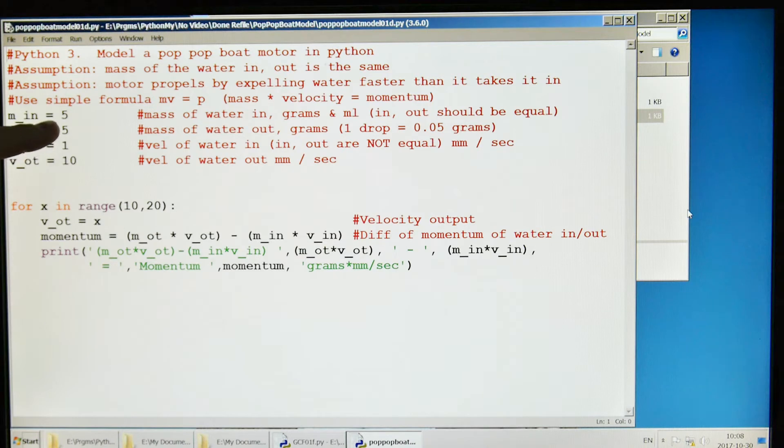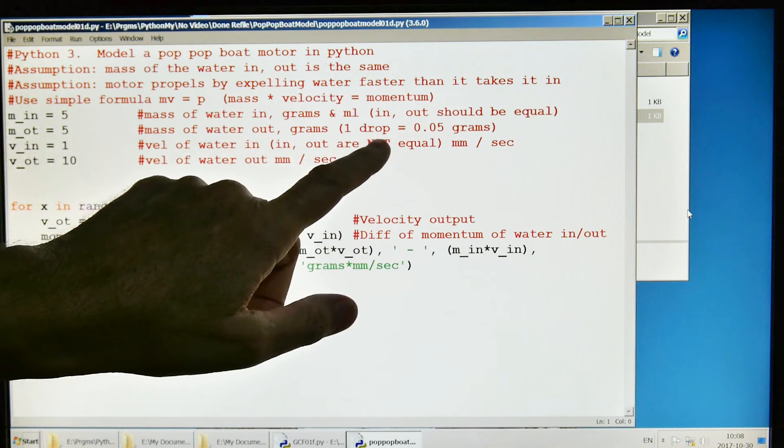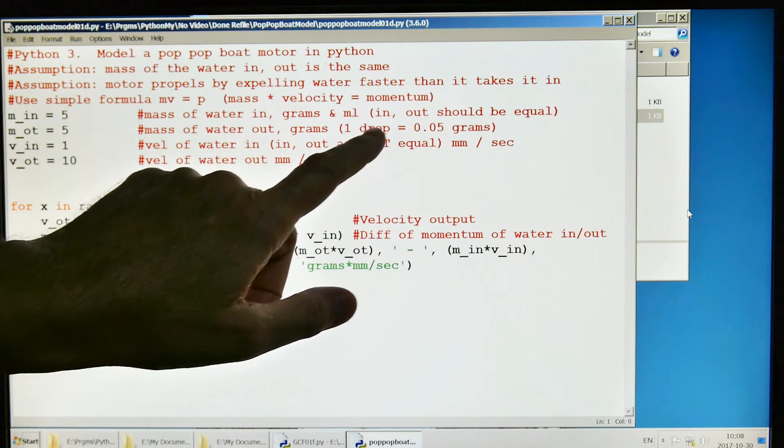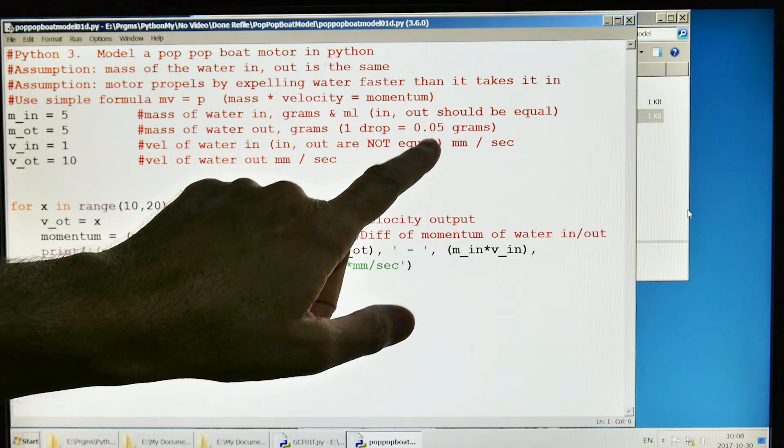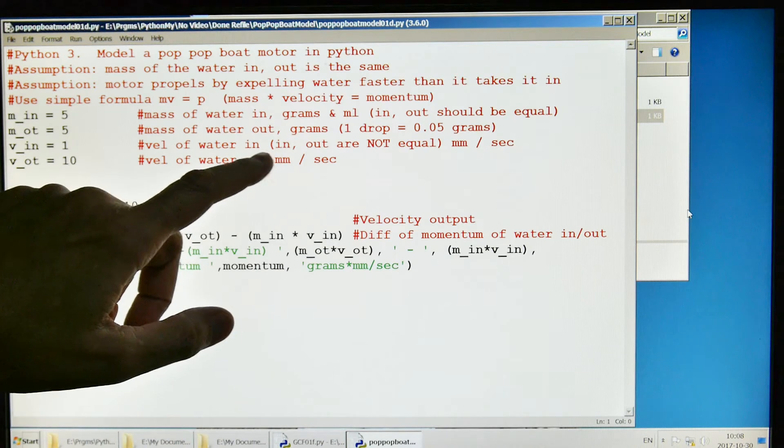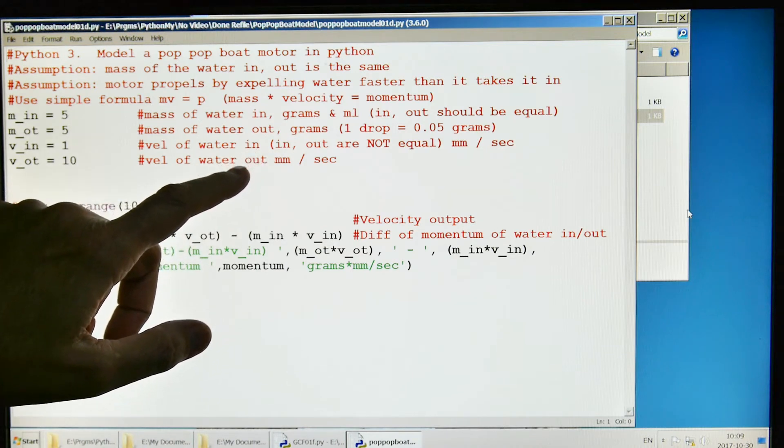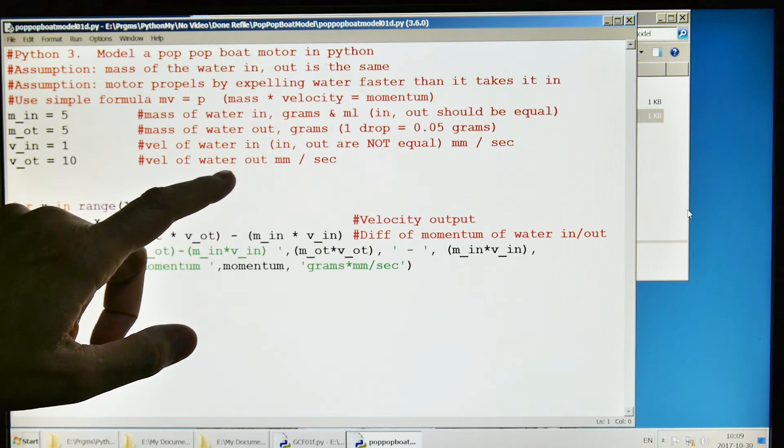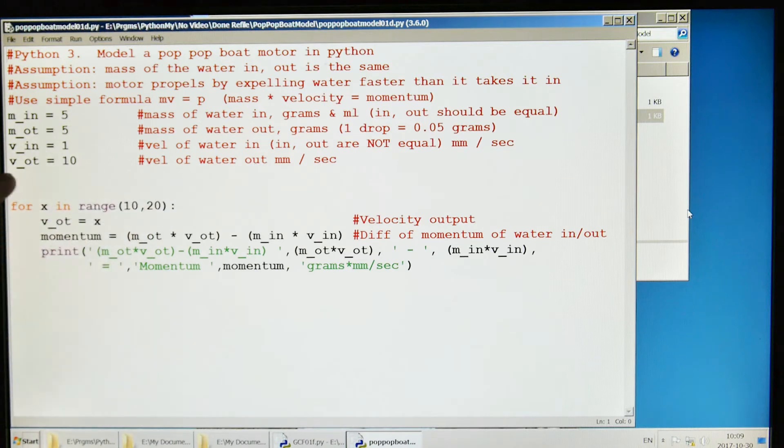I'm going to start out with five grams. Just to give you an idea about how much five grams is, one drop is 0.05 grams, so five grams represent a lot of drops of water. The velocity in, I'm going to set it to one initially. The speed of the water in and out of the engine are not the same, and that's what's going to drive the boat forward. Here is the velocity out.